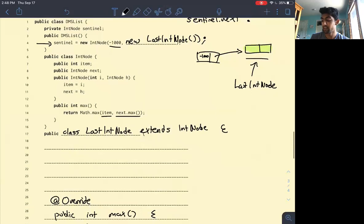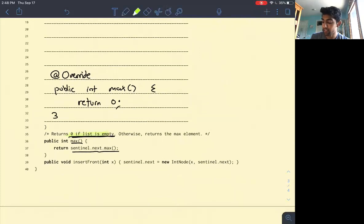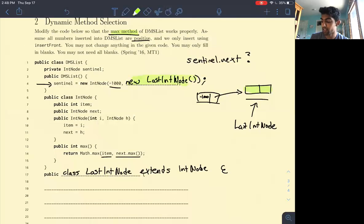We want sentinel.next.max to return 0 if the list is empty. Currently, sentinel.next is this value of the node we specify right here, right? In other words, it's this green node. And we want this to give us 0, but right now it's giving us this value. So to call a different max function,